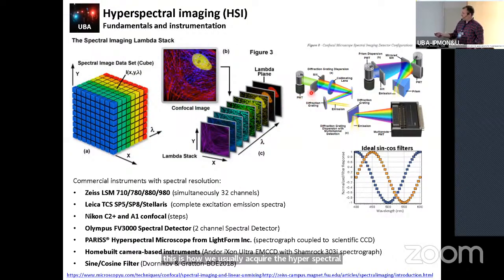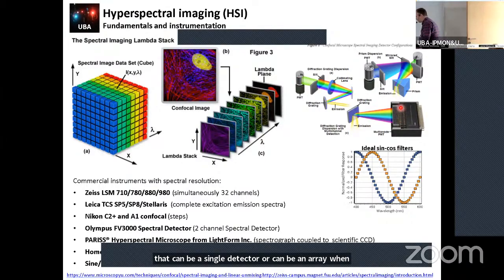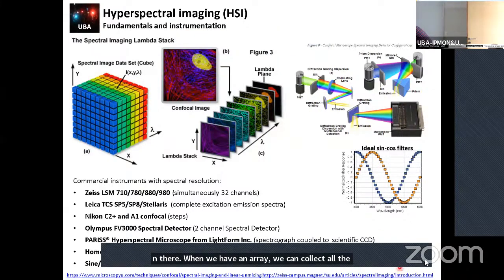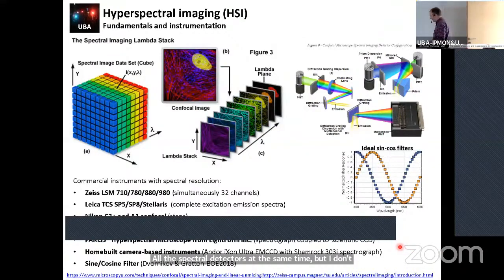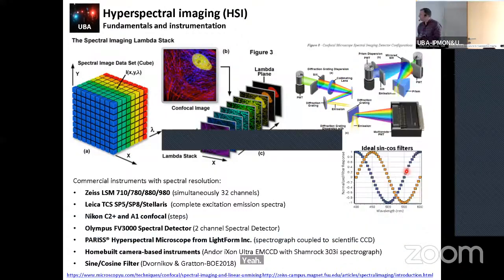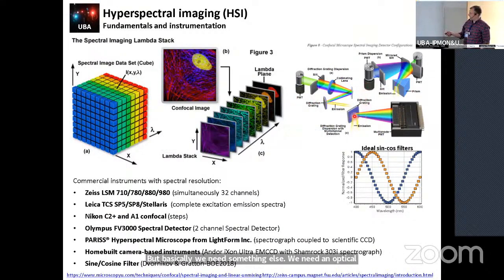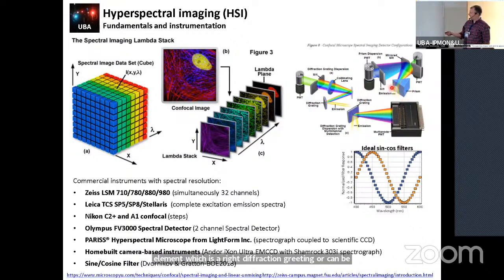To acquire hyperspectral images, we have detection that can be a single detector or an array. With an array, we can collect all spectral channels at the same time. We need an optical element — a diffraction grating, or a prism, or a quasar in the case of the ZEISS — that will disperse the fluorescence emission, so we can pick wavelength by wavelength or all the spectra together.